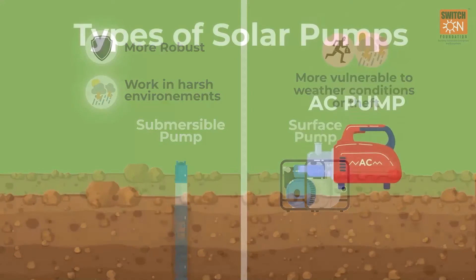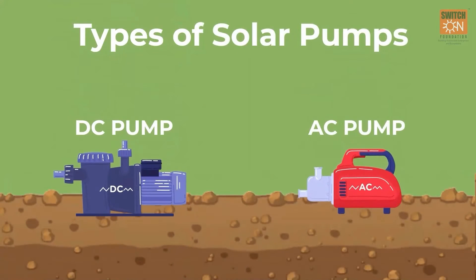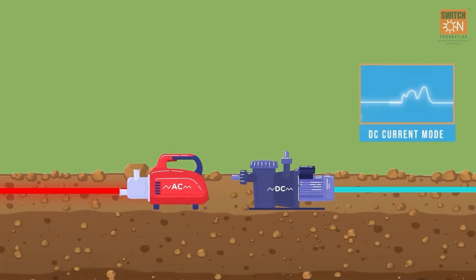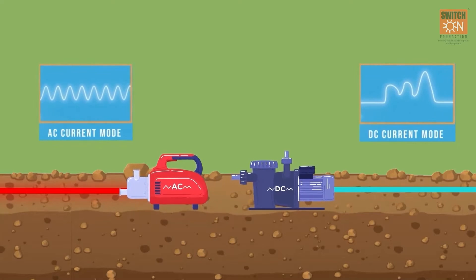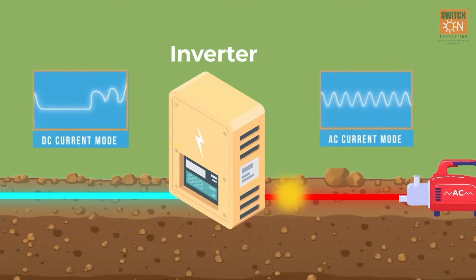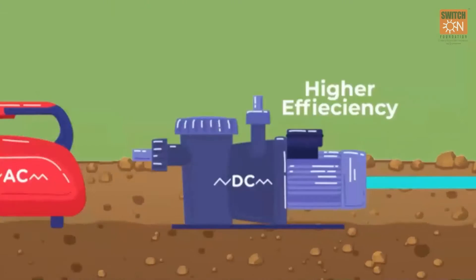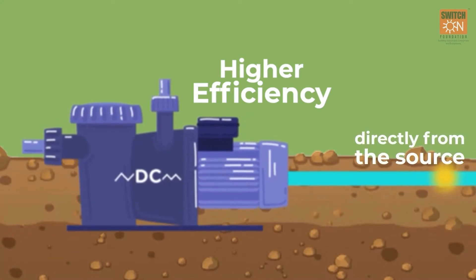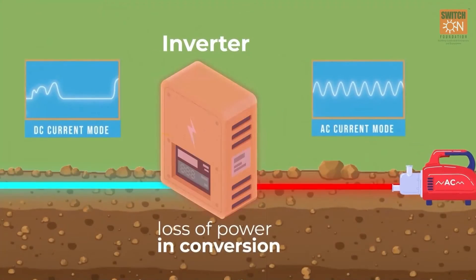Pumps are classified as DC pumps and AC pumps based on the type of current used. DC pumps operate on direct current while AC pumps operate on alternating current. AC pumps require an inverter to convert DC from the solar panels into AC. DC pumps have higher efficiency since DC to AC conversion leads to a loss of power.